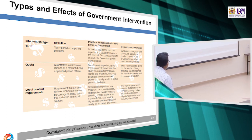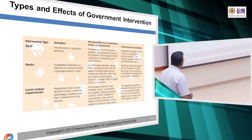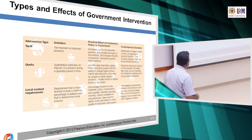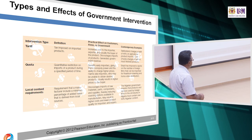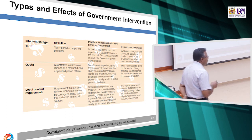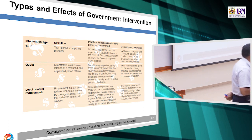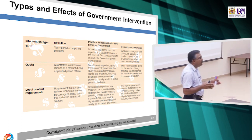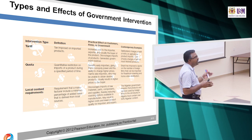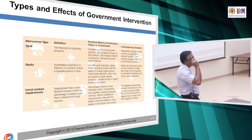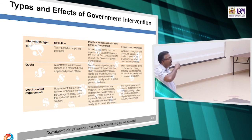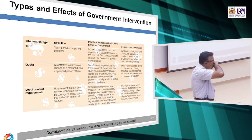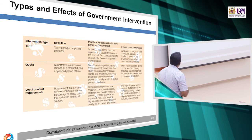Local content requirements ensure there is local content from local suppliers. For example, under AFTA, a car we import — say Peugeot — 60% is from France where the car comes from, and another 40% is from local content suppliers. There are also regulations on technical standards — safety, health regulations. For example, Saudi Arabia bans the importation of firearms.